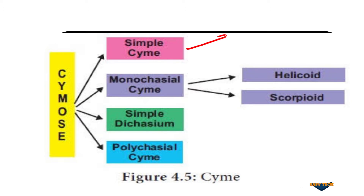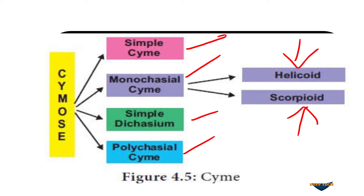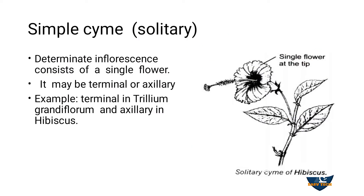We will see the types of cymose inflorescence: simple raceme, monochasial cyme, simple dichasium, polychasial cyme. In monochasial cyme, it is again divided into helicoid and scorpioid. First we will see the simple cyme which is solitary.